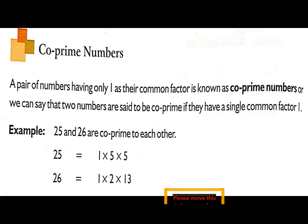And next number is 26. The factors of 26 are 1 × 2 × 13. When you are seeing the common factors, we have a single common factor 1. So 25 and 26 are co-prime to each other.